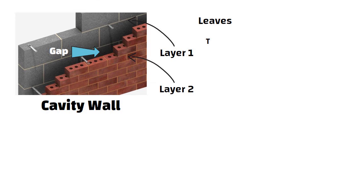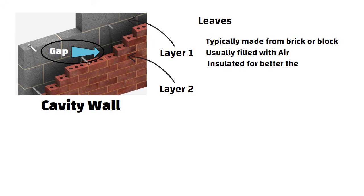The two layers are typically made from brick or block, and the gap is usually filled with air, though it can sometimes be insulated for better thermal performance.